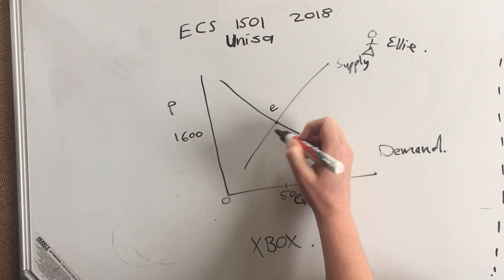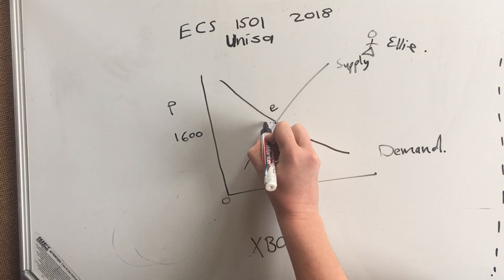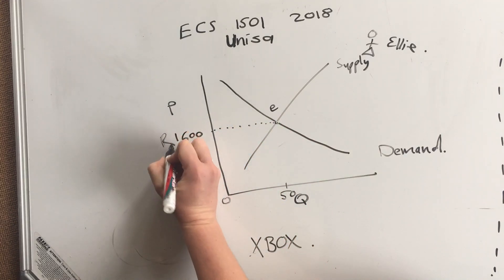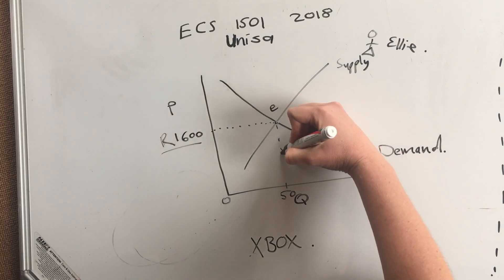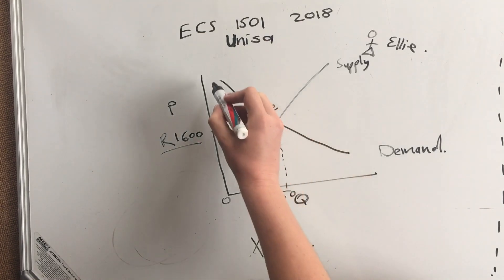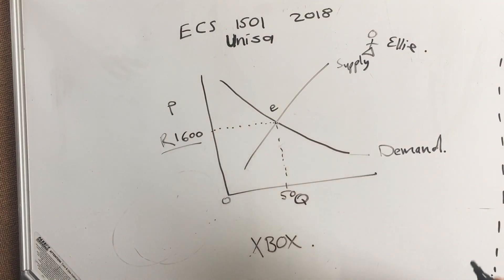Okay, so if we're at the equilibrium, there's a 1600 rand price tag on the thing, and there are 50 people buying this Xbox. I know it looks a little confusing, but bear with me. Now remember, I said this line over here is the demand curve.